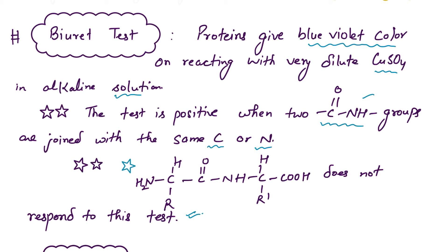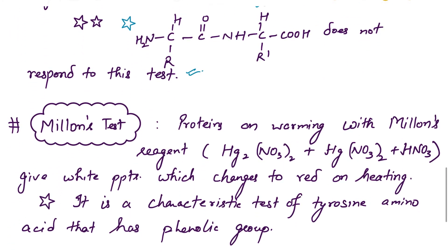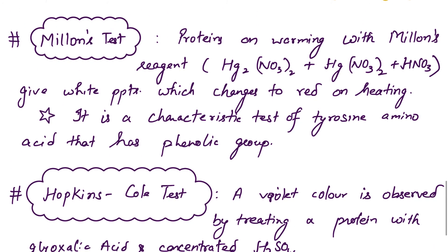Next is Millon's test. Proteins on warming with Millon's reagent — basically mercurous nitrate and mercuric nitrate plus nitric acid — give white precipitates which change to red on heating. Millon's test is for proteins and is the characteristic test for the amino acid tyrosine, which has a phenolic group. The last test is the Hopkins-Cole test, which gives a violet color.